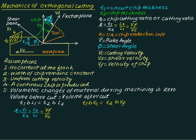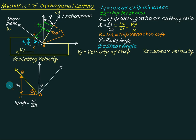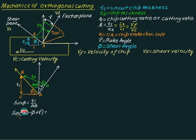To find the relation between chip thickness ratio r, shear angle phi, and rake angle gamma, consider this triangle. Let point A be here, point B at the other end of the shear plane, and C be perpendicular to the rake face. The shear plane makes angle phi with the horizontal. t1 is opposite to phi and AB is the hypotenuse, so sin(phi) equals t1 divided by AB. Perpendicular to the rake face, we have t2 with D as the endpoint, and this angle is 90 minus phi plus gamma.